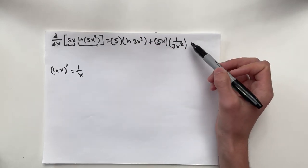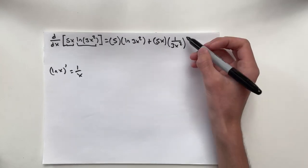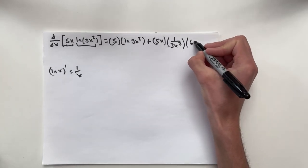3x squared, we need to multiply by the chain. So the derivative of this inner function, 3x squared, is simply 6x.